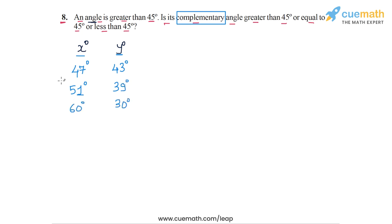In each of these cases, because the original angle is greater than 45, we can see that the complementary angle is less than 45. But why should this be the case?